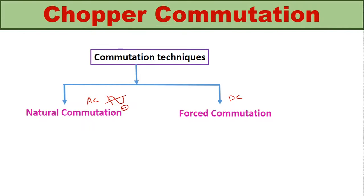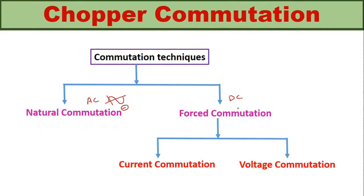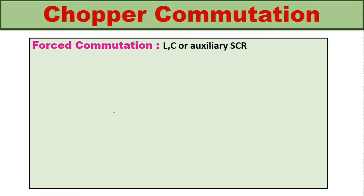Since the SCR turns off due to the naturally occurring negative half cycle of the AC input signal, this is called natural commutation. In force commutation, when a DC input source is used, we must use an external commutation circuitry to forcefully turn off the conducting SCR. Force commutation can be further divided into two types: current commutation and voltage commutation.